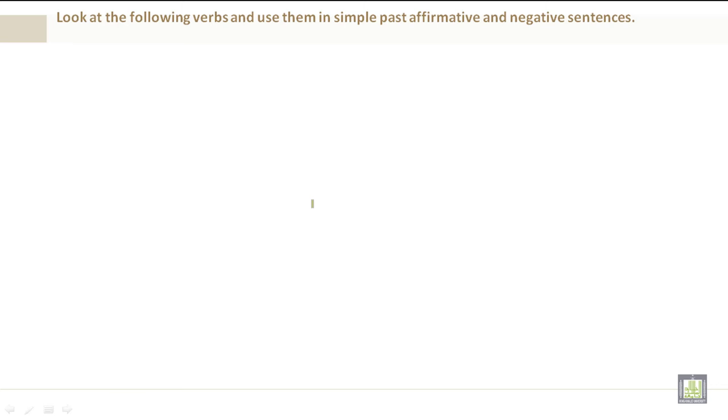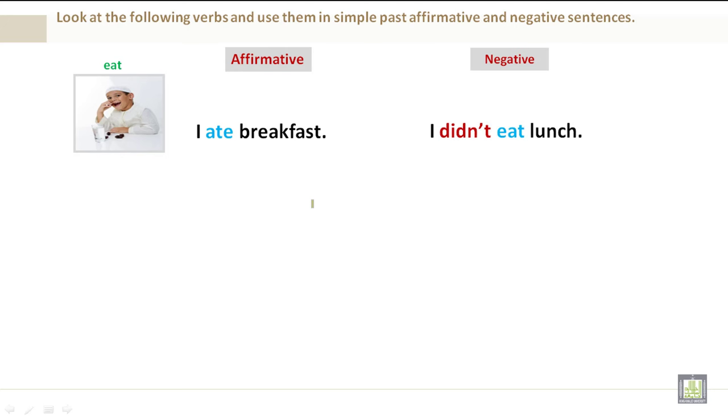Look at the following verbs and use them in simple past affirmative and negative sentences. For example, eat. Affirmative: I ate breakfast. Negative: I didn't eat lunch.